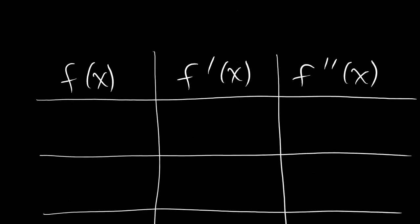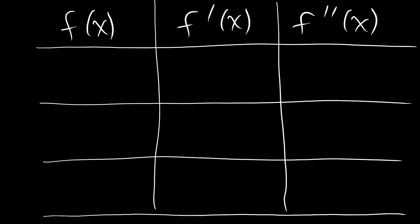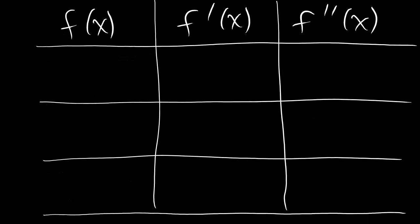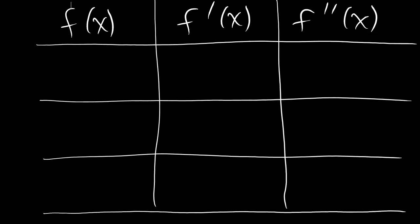Here's what we're looking at. We've got a chart and we're going to fill this in. We're going to cover what happens if we know about positive, negative, increasing, decreasing, concave up, and concave down.